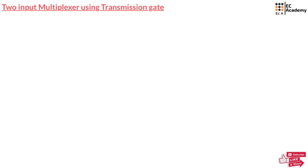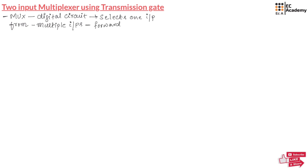A multiplexer, which is also known as mux, is a digital circuit that selects one input from available multiple inputs and it will forward the selected input to a single output line.